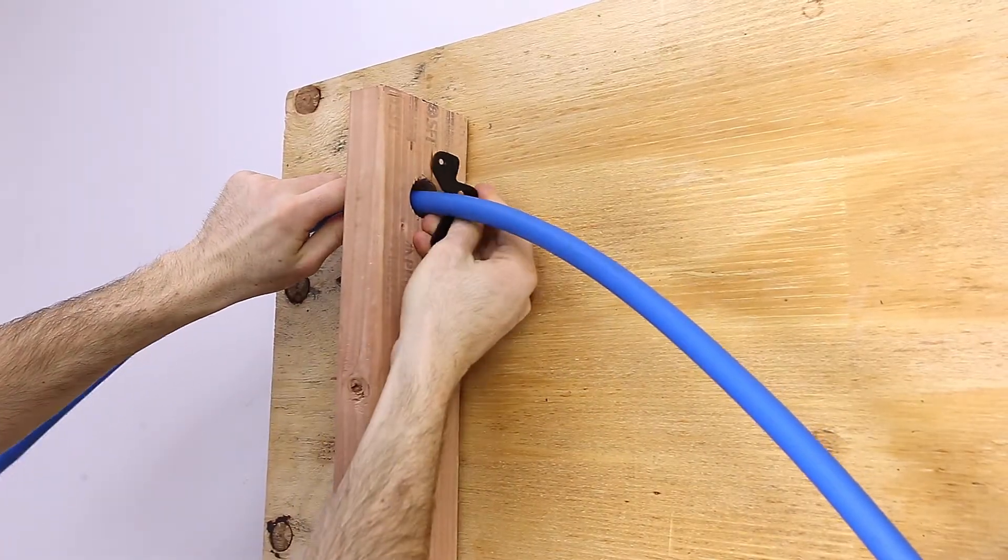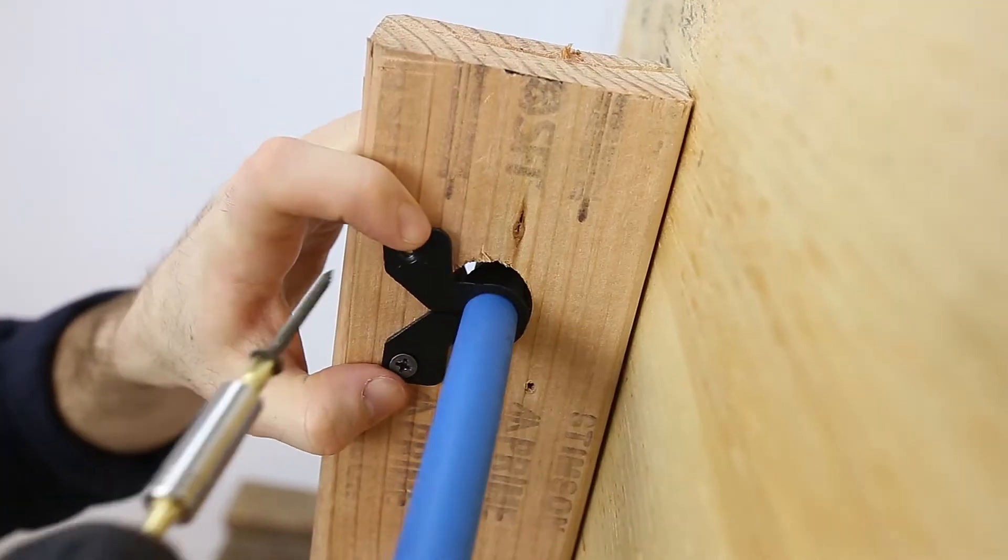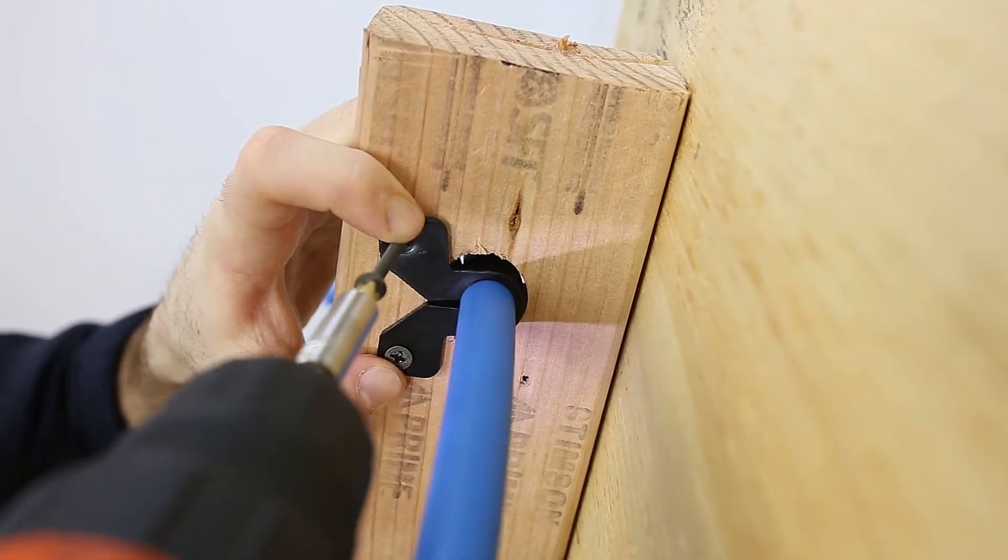One way to install these clamps is to place it over the joist hole and just drill it in. Make sure to squeeze the suspension clamp so it's tight around the tube.